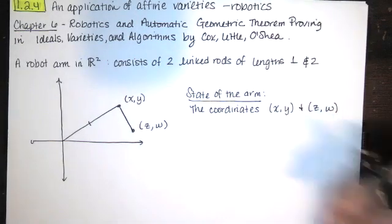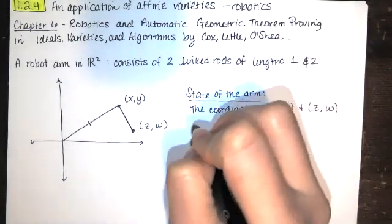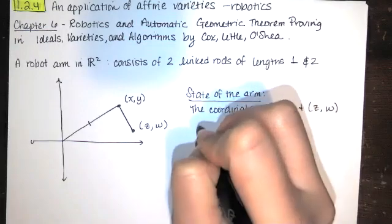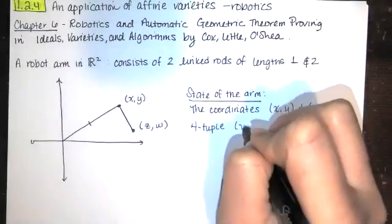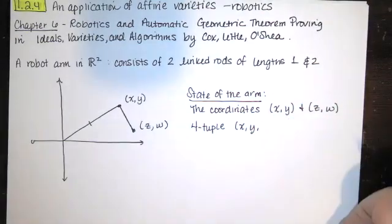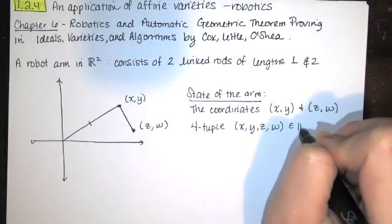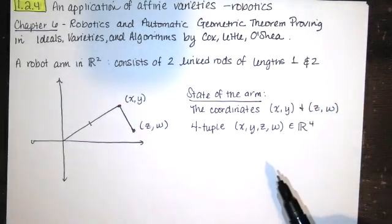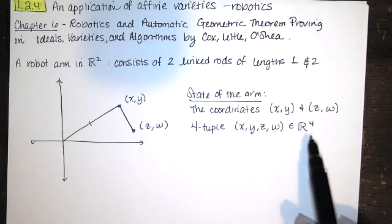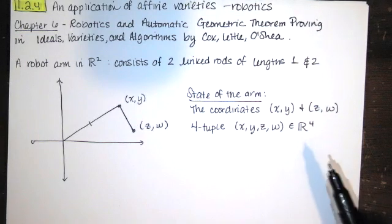If you know what (X,Y) is and you know what (Z,W) is, you know what the arm looks like in the XY plane. So the state of the arm is a four-tuple: we've got an X, Y, and a Z and a W, and each of those is a real number. This is in a four-dimensional affine space where the field is the set of all real numbers, R.